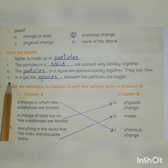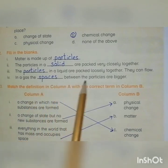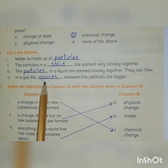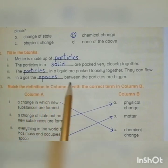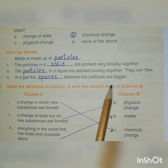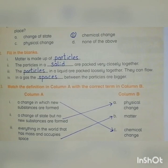Fourth blank: In a gas, the ___ between the particles are bigger. The answer is Spaces. In a gas, the spaces between the particles are bigger, because the particles are far apart from each other.